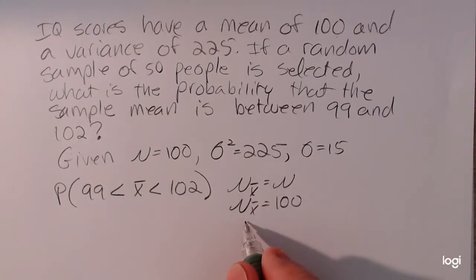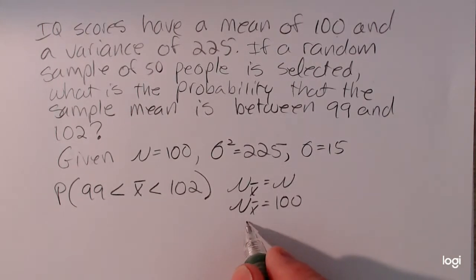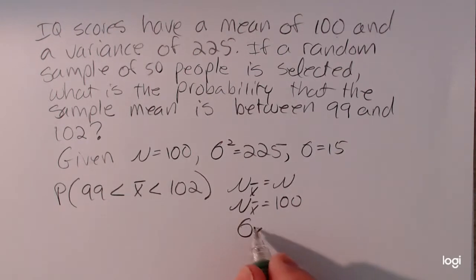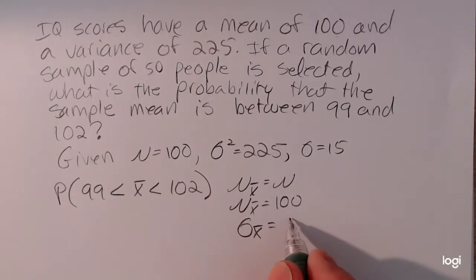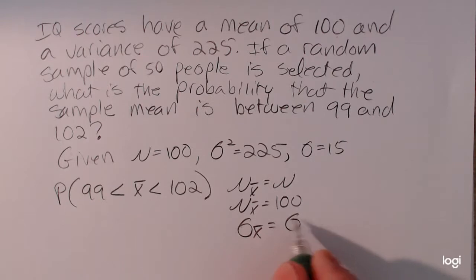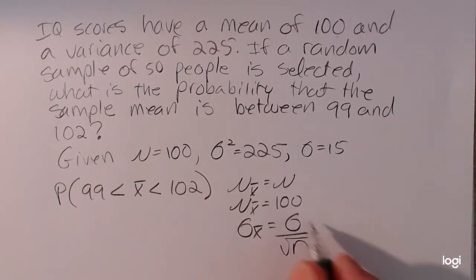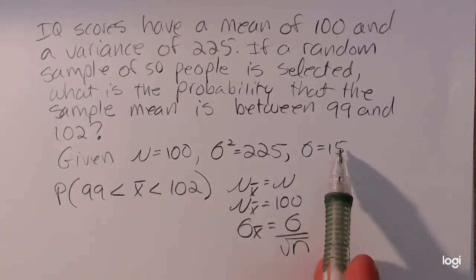But the standard deviation of the sample means is smaller. Specifically, that standard deviation is equal to the standard deviation of the original population divided by the square root of n. This is the standard error of the mean, and this is what you need to use if you want to use your Z table to find the probability and convert to a Z score. You're going to need to divide that denominator by this rather than 15.